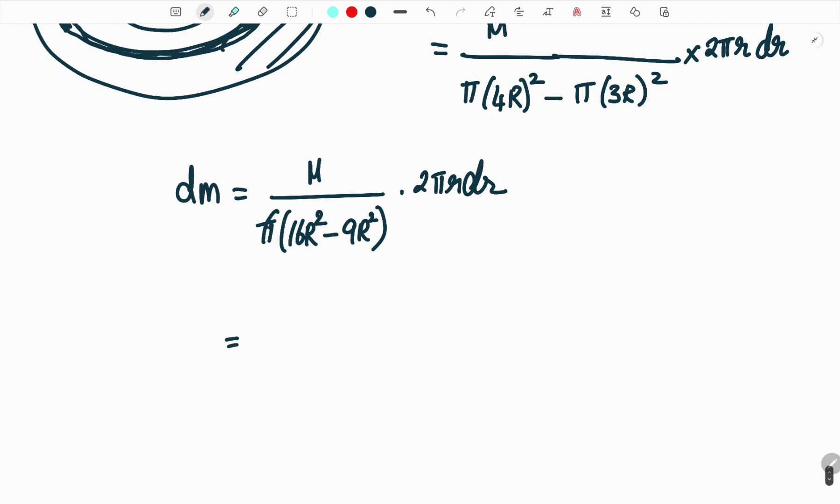So here I will have this π cancelled out. So I have 2 divided by 7r square, capital R square, into r dr. So this is the mass of my small element dm.